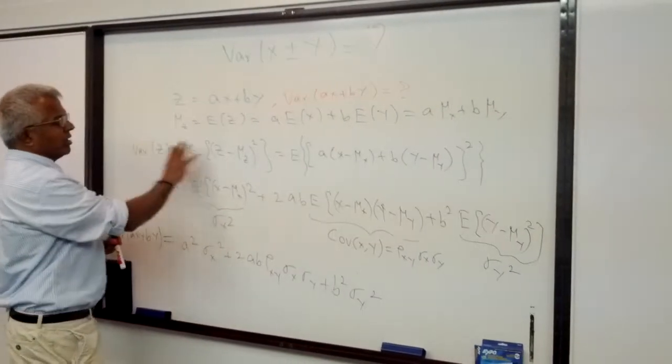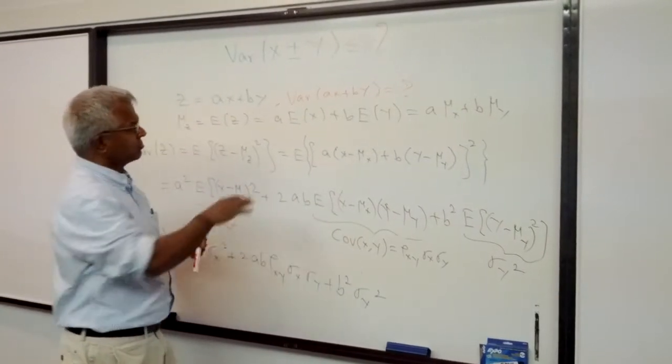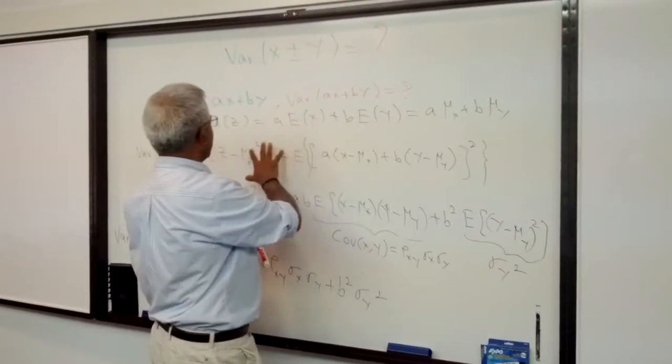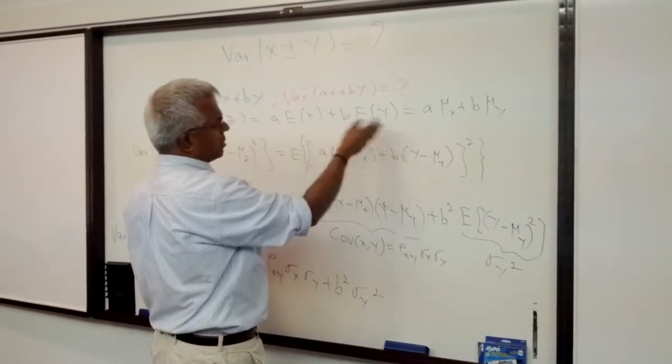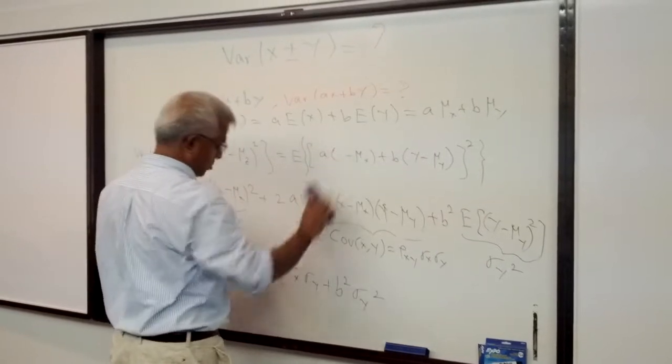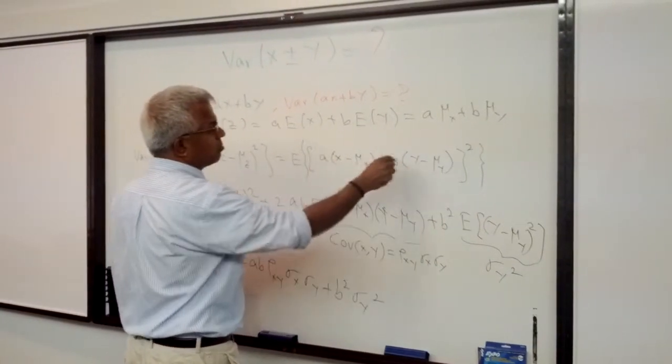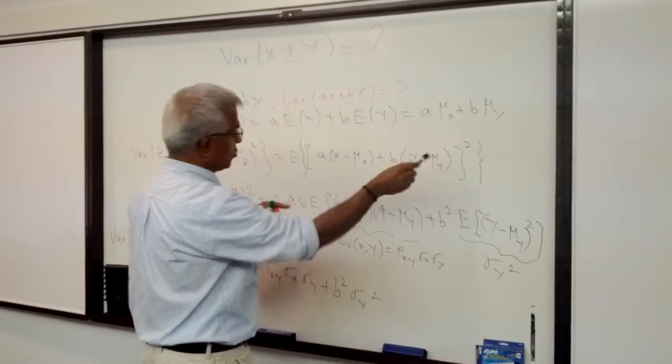So the definition for variance is Z minus MuZ the whole squared expected value. I plug in for Z and MuZ. So it will be A multiplied by X minus MuX plus B multiplied by Y minus MuY squared.